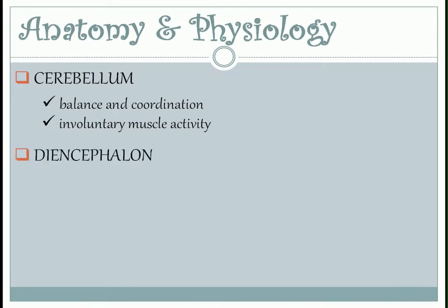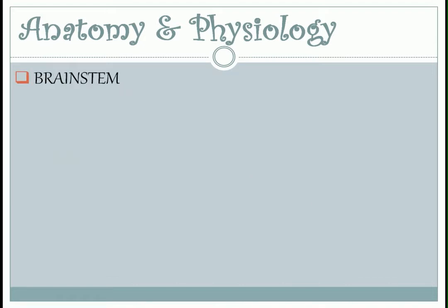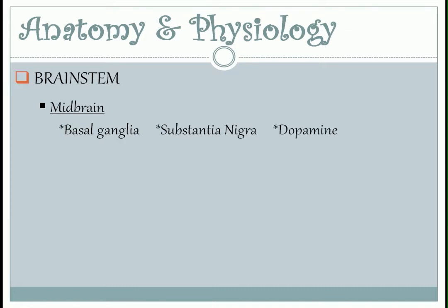Diencephalon includes the thalamus and hypothalamus. Both are for hormone and sleep regulation, while the hypothalamus alone is for thermoregulation. Midbrain — this is where you can find the basal ganglia, and in the basal ganglia you can locate the substantia nigra, where you can find dopamine, which is a neurotransmitter responsible for smooth muscle movement.